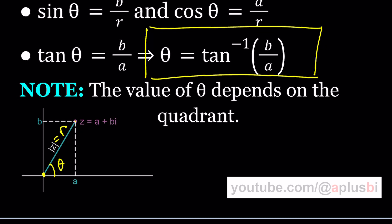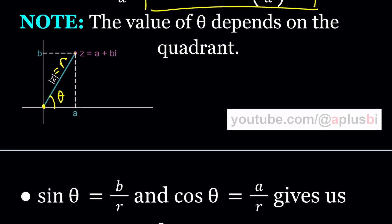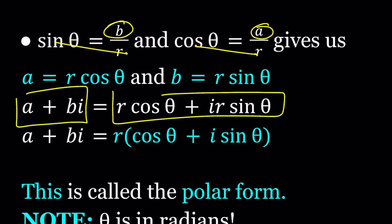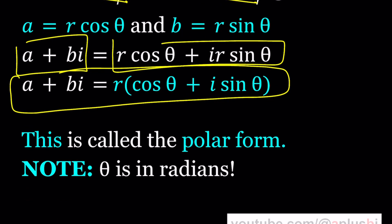But you got to be careful because the value of theta depends on the quadrant. By replacing b with r sine theta and a with r cosine theta, we end up with the polar form of a complex number. This is a really nice form of writing a complex number and we're going to use this a lot for solving problems.